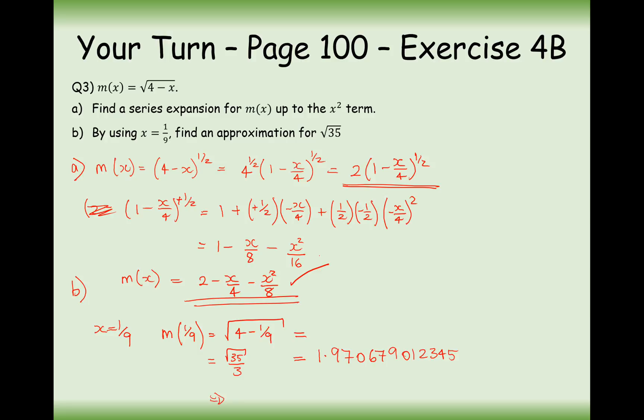So therefore, root 35 is going to be this number tripled, times by 3, and we get 5.91. Does this make sense according to what we know about square roots of 35 and 36? Yes it does. Square root of 36 is 6, so 5.9 makes perfect sense.